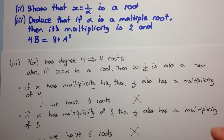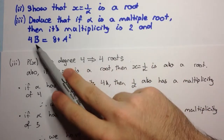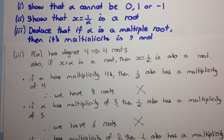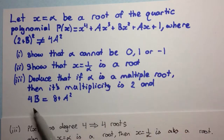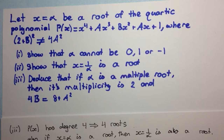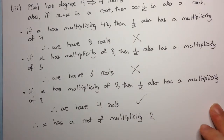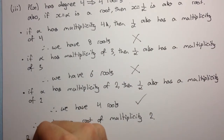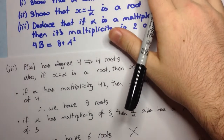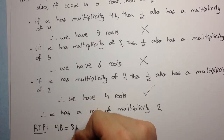Now, the next part of part 3 says: given multiplicity 2, we also have to show that 4b equals 8 plus a squared. Note that these are related to the coefficients of the polynomial. So here we need to consider our sum of roots, our product of roots, sum of roots two at a time, etc. We are required to prove that 4b equals 8 plus a squared.